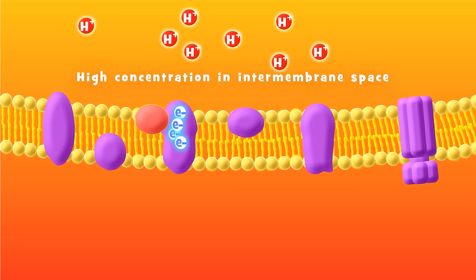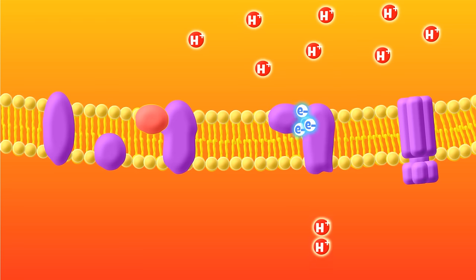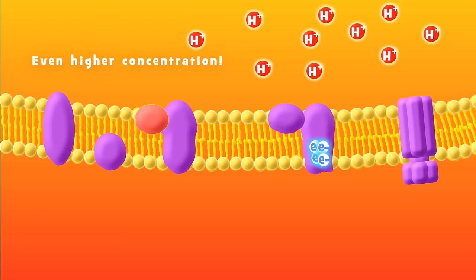Now the electrons are transported to a final protein complex, where their energy is used once again to pump hydrogen ions into the intermembrane space, making the concentration even higher.